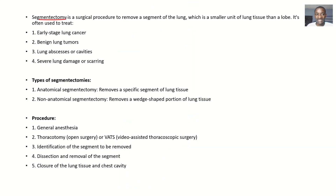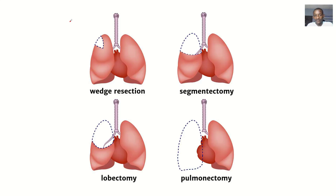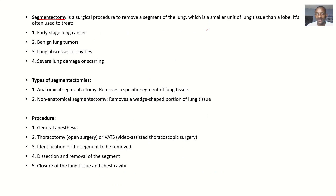So this segmentectomy is a surgical procedure to remove a segment of the lung. This image makes it much clearer. You're just removing one segment — you're not removing a whole lobe. You remove one segment of the lungs, which is a smaller unit of the lung than a lobe, so you're not removing a whole lobe, just some part of the lobe.